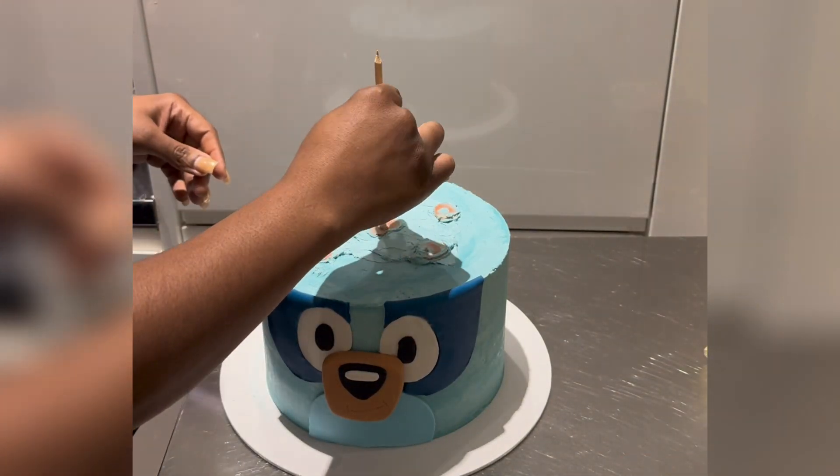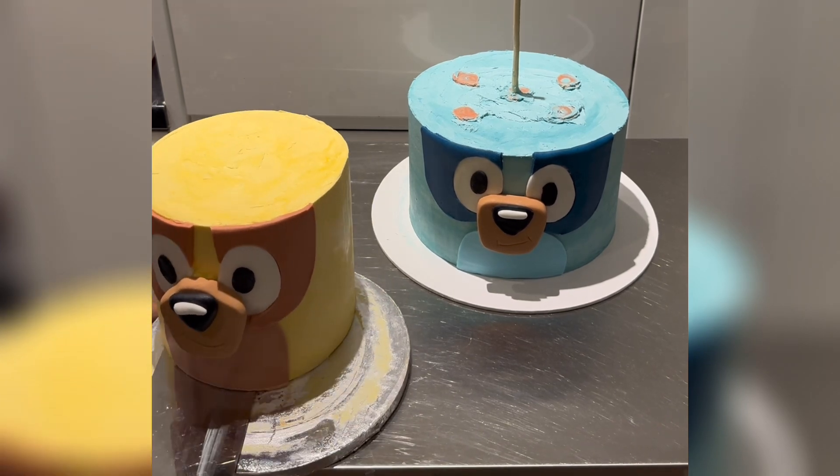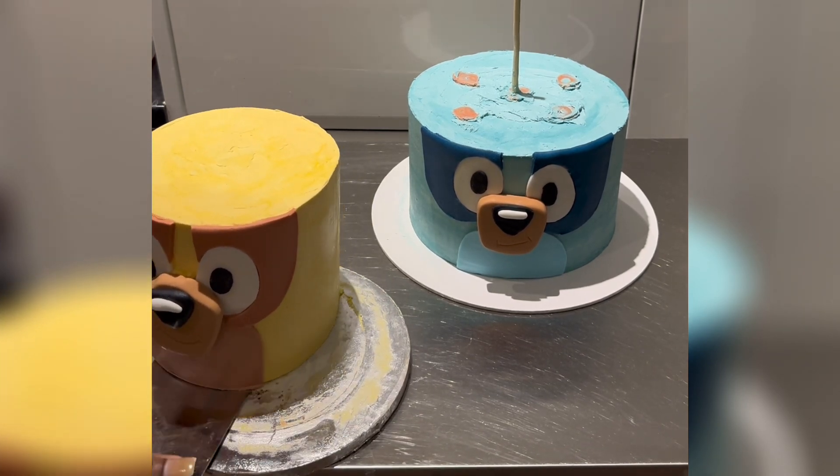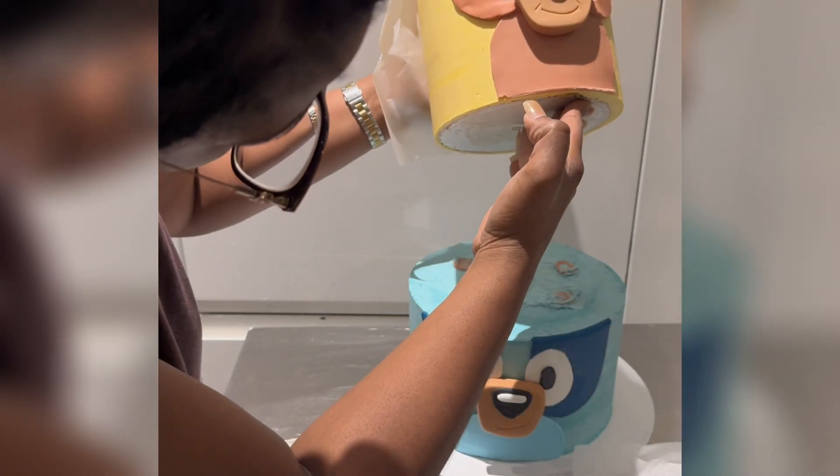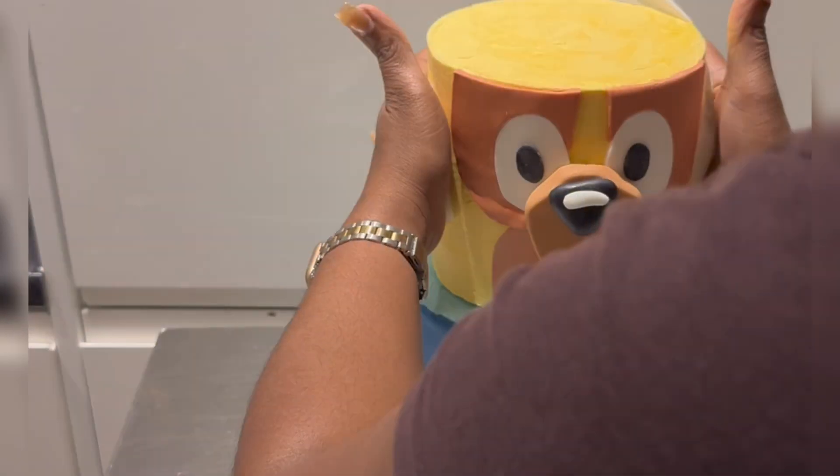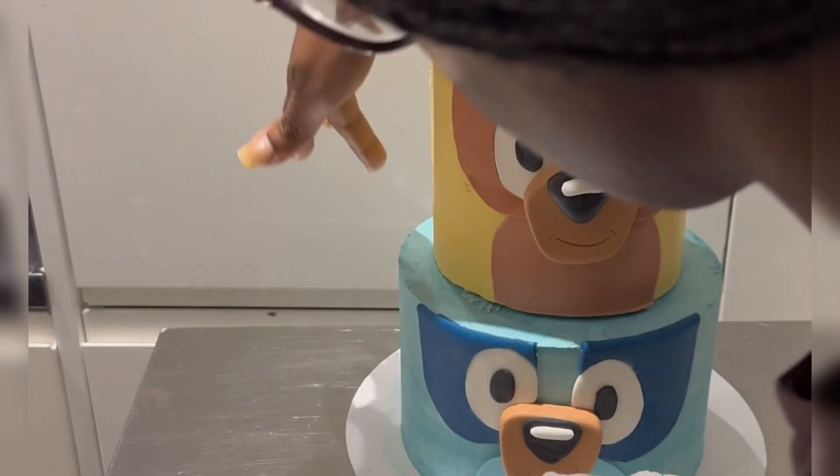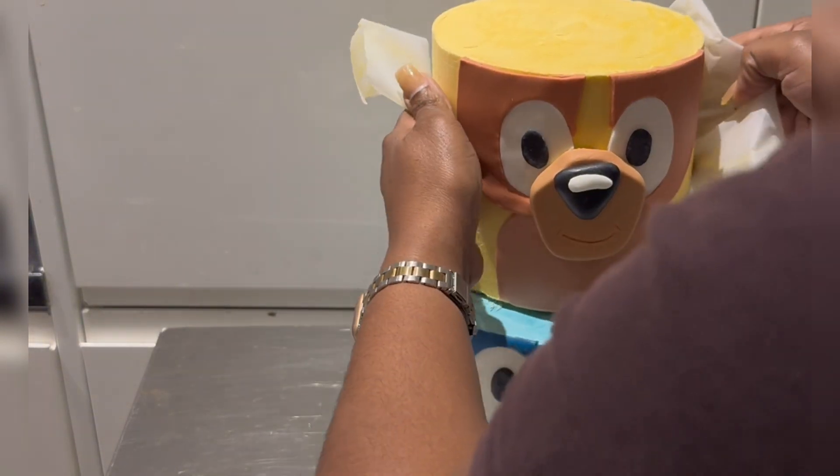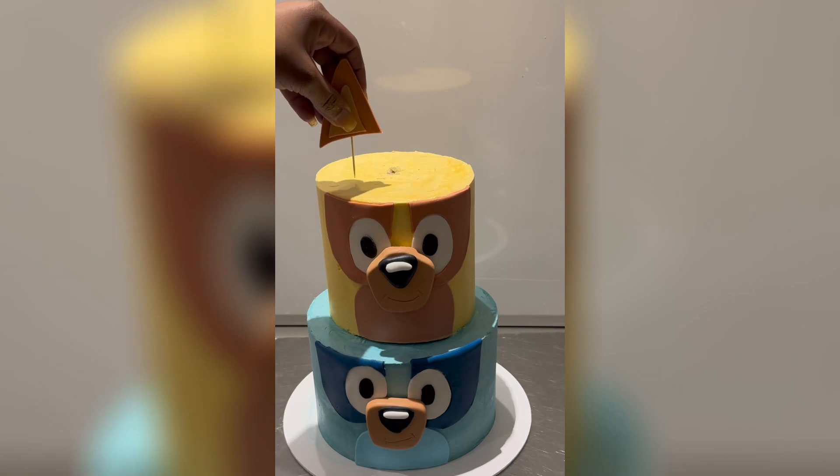So it's time to stack the two tiers together. And I'm using a central dowel here. Just have to make sure the top tier has a hole in the middle of the board to ensure this process is easy. Just adjusting it in. And as you can see there's a line for where the tiers meet. And I would just advise that you use some buttercream to fill in any spaces necessary.